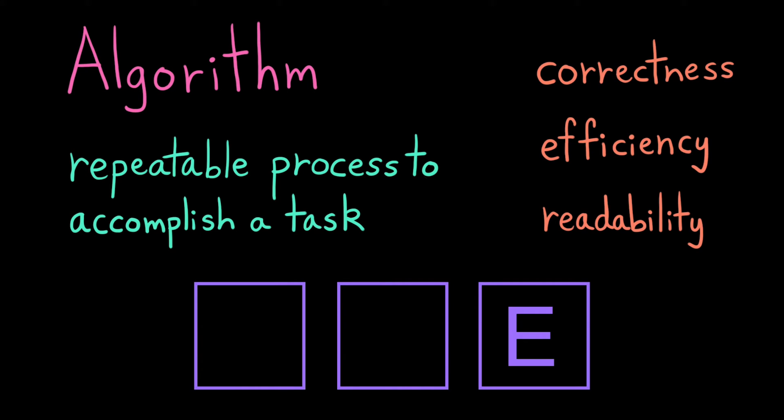Correctness. Does the algorithm accomplish the task? Efficiency. How long does it take to accomplish the task? And readability. How complex is the process? And how hard is it for somebody to understand?